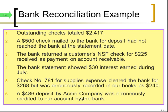Number six: a $486 deposit by Acme Company was erroneously credited to our account by the bank. This isn't a 'bank error in your favor' situation — you can't keep that money. You should notify the bank. If you don't, the bank will generally find out shortly, and the money will be taken out of your account one way or another. Acme Company will also notice their deposit didn't reach their account and will notify the bank. So we need to subtract the $486 out of the bank side.